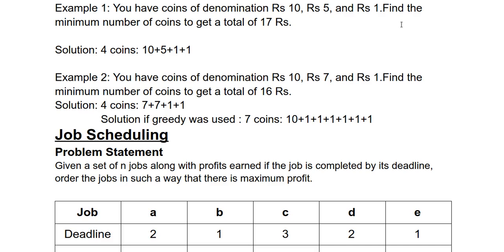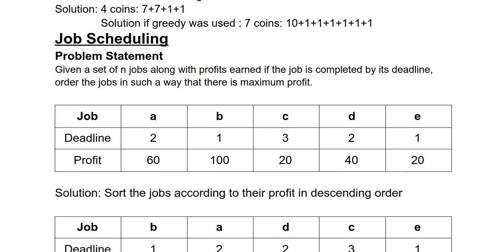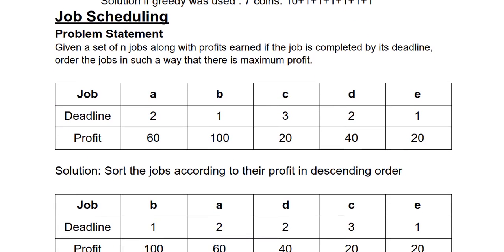Now let us look at an example where you can use greedy approach. This is the job scheduling problem. Its problem statement is: given a set of n jobs along with profits earned if the job is completed by its deadline, order the jobs in such a way that there is maximum profit. Here you are given these jobs a, b, c, d, and e with their deadlines—that is, a gets completed at the second second, b gets completed at the first second, and so on—and the associated profits are also mentioned with them.